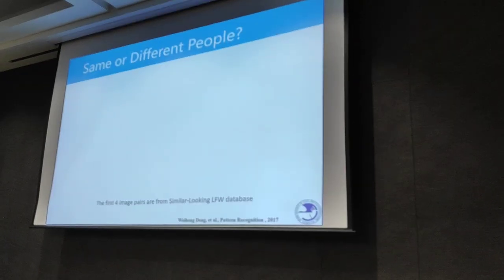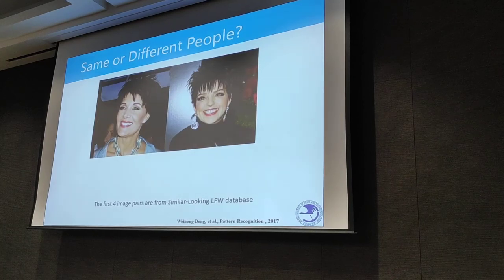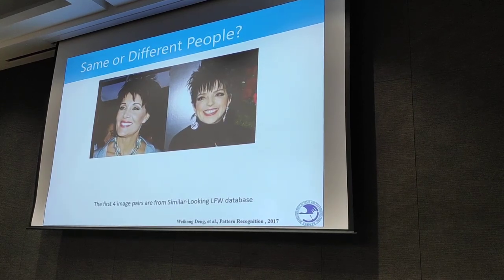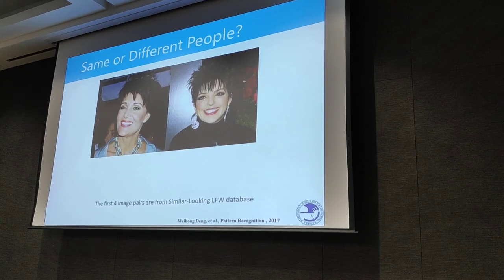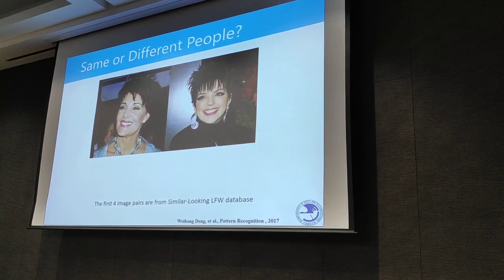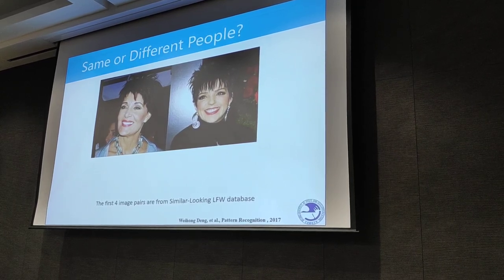Let me show you some examples that test recognition accuracy of deep CNNs. The task is to determine whether two facial images are from the same person or not. Now we can compete with the computer. Do these two images come from the same person? Raise your hand if you think they are the same person.